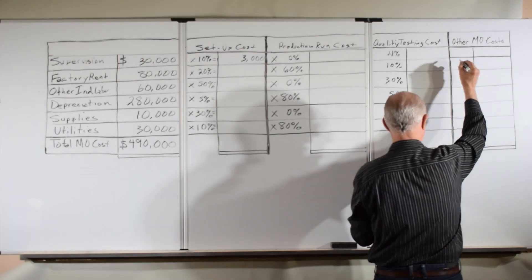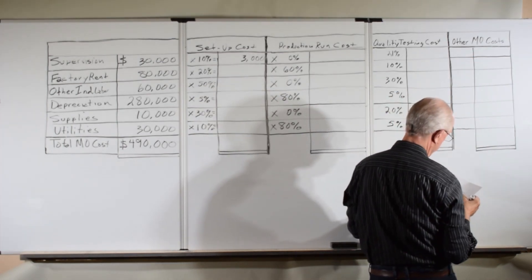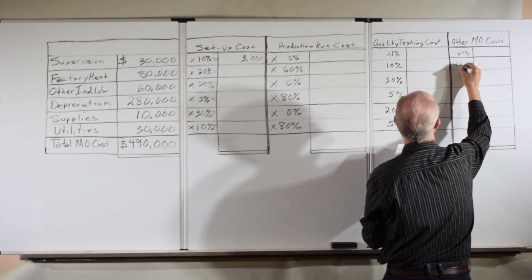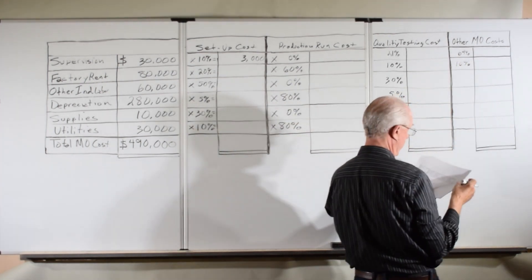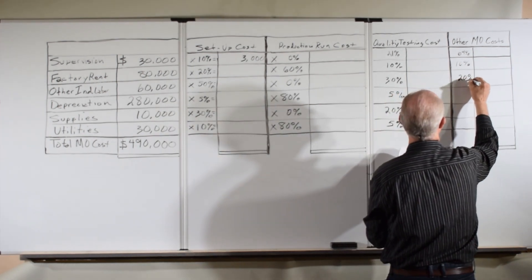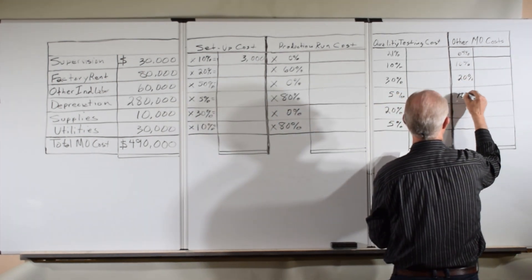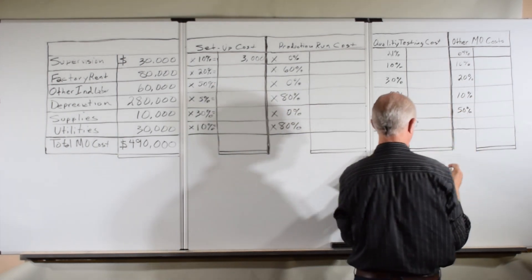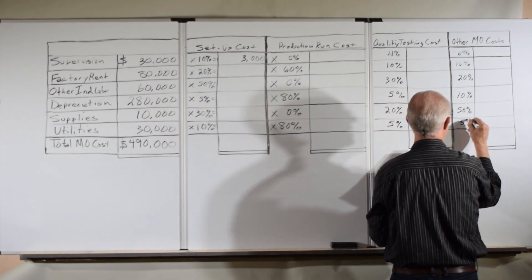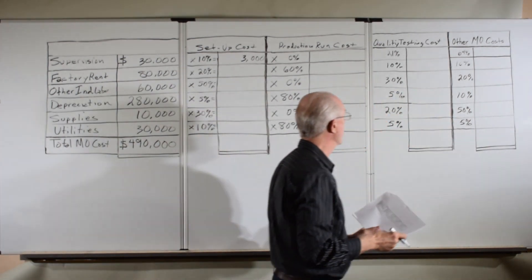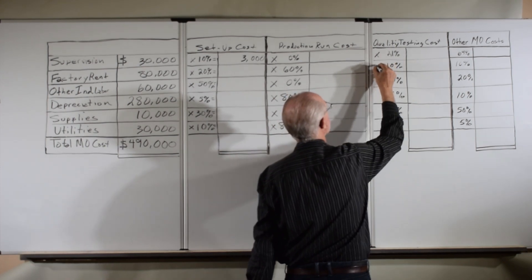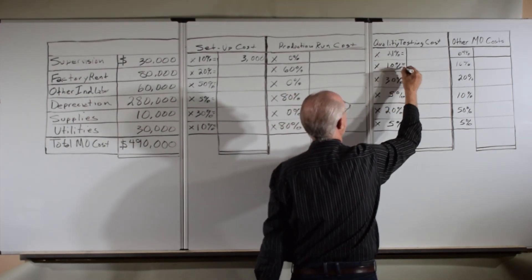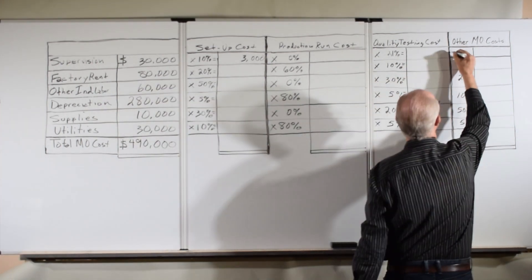For the other manufacturing cost, it's 69% of the supervision, 10% of the factory rent, 20% of the other indirect labor, 10% of the depreciation, 50% of the supplies, and 5% of the utilities. So we've got all the percentages in now. For formality's sake, we put the little multiplication signs in to let everybody know what we're doing here.